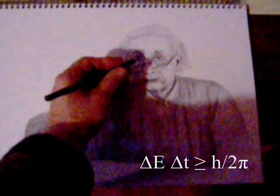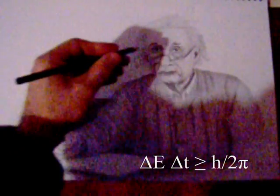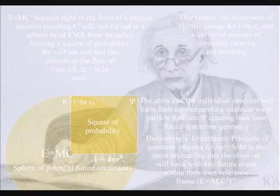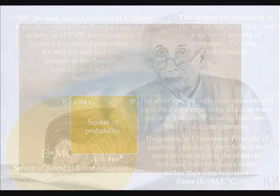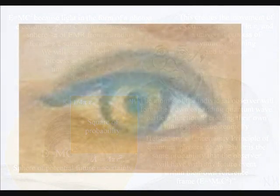An artist will take energy and time to create a work of art because the atoms of the hand and eye have bonded together, forming the movement of electric charge, creating their own potential future. Creation is truly in the hand and eye of the beholder in this theory.